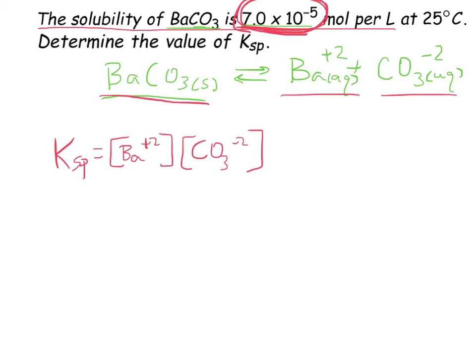So, if I was going to set up an ICE box, 7.0 times 10 to the negative 5 would be the change for Ba plus 2 and the change for CO3 minus 2. So, I can actually plug those straight into that Ksp expression.